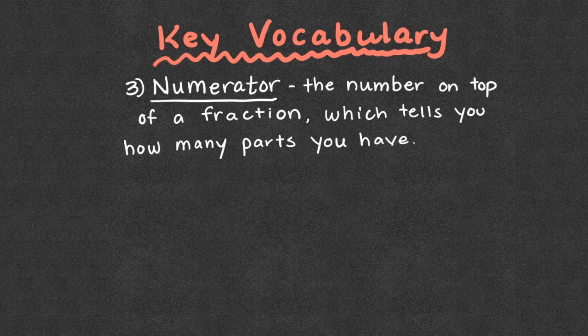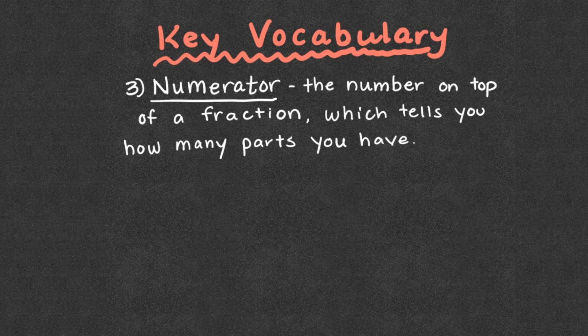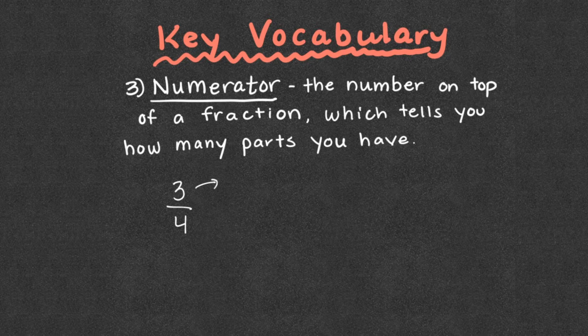The numerator, that's the number on top of a fraction which tells you how many parts that you have. So if we looked at the fraction 3 fourths, 3 is our numerator. It tells us that we do have 3 out of 4 parts.